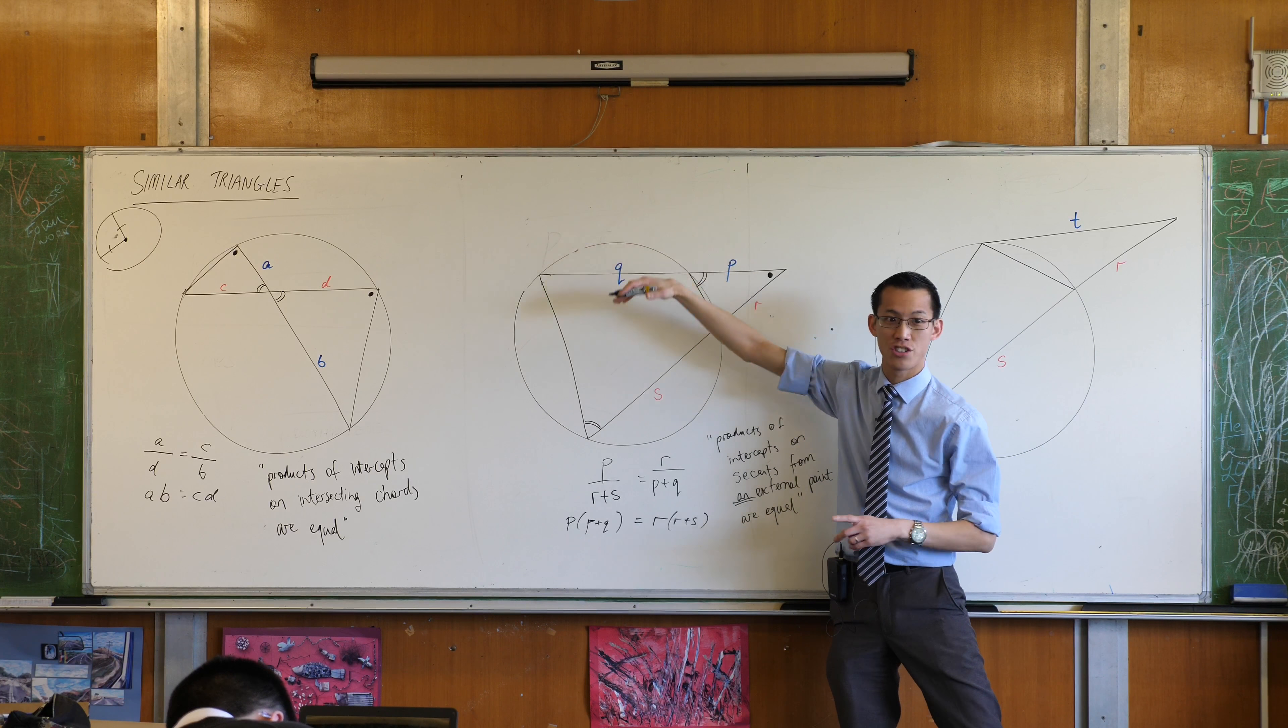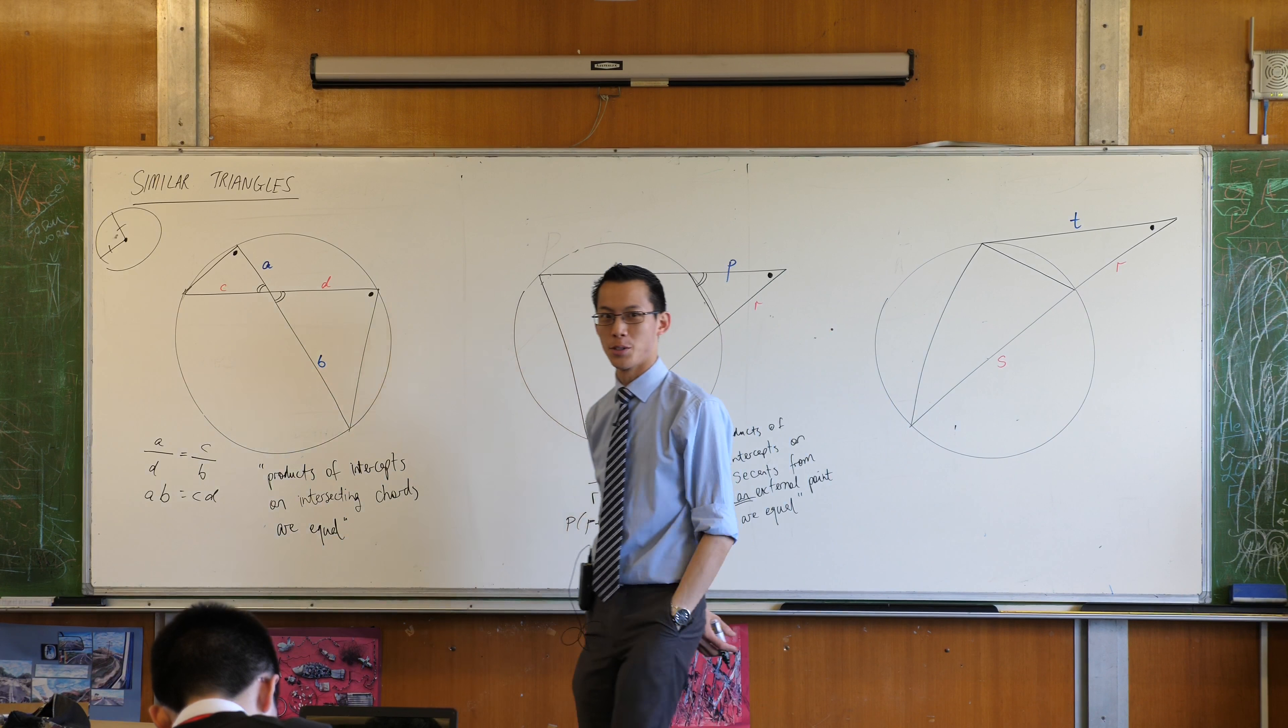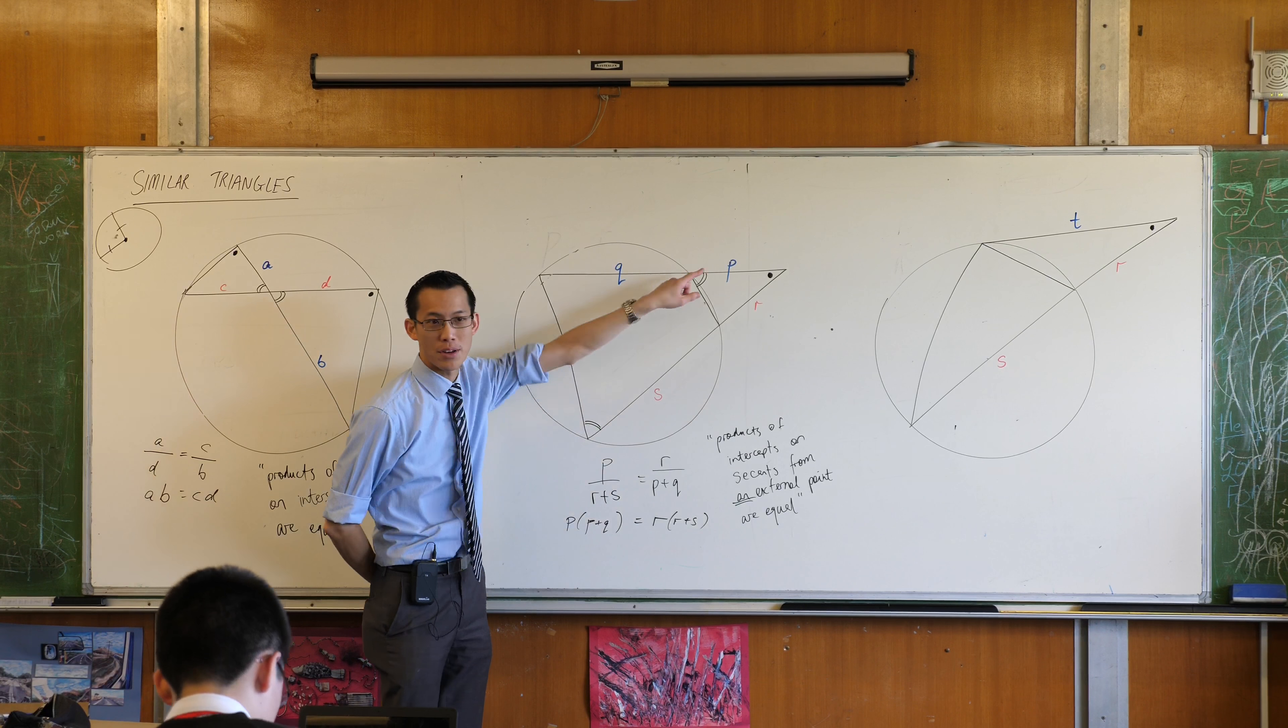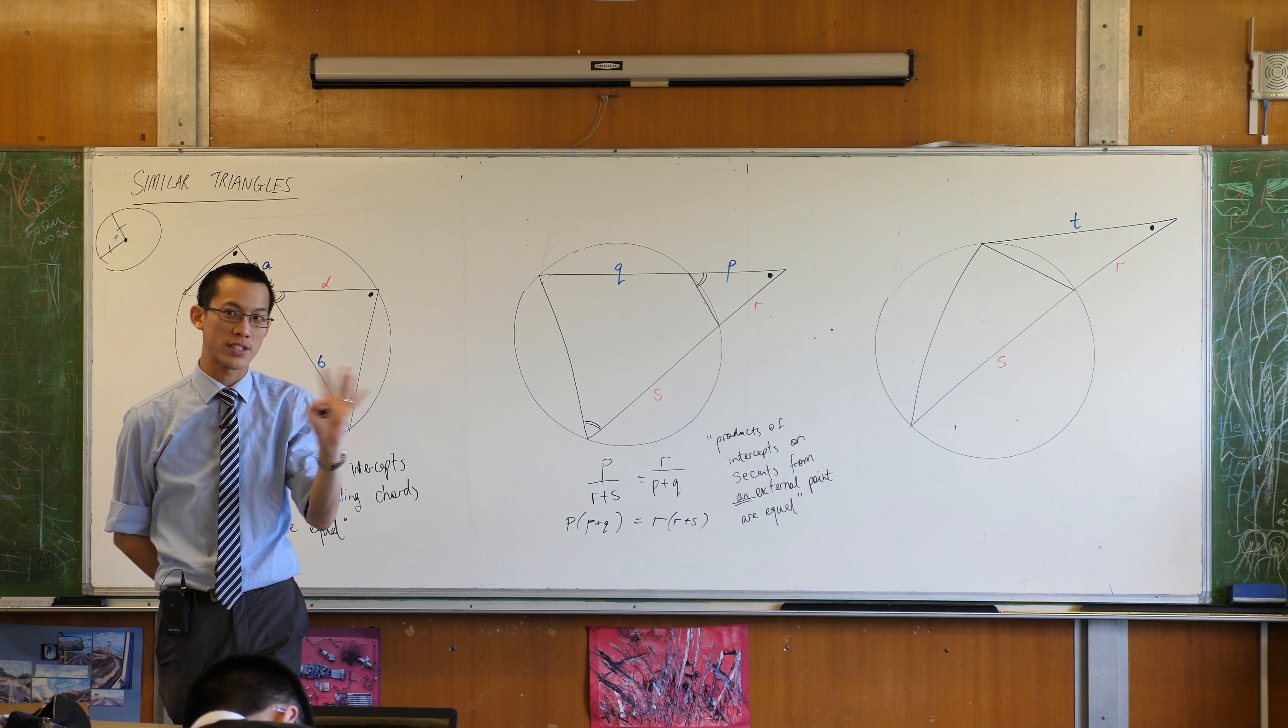See this guy over here? It's still going to be common between the two triangles that you're trying to prove to be similar. But what's interesting is you no longer have a cyclic quadrilateral, do you? So you can't take advantage, you can't use this property that the exterior angle of a cyclic quad because you don't have a cyclic quad.